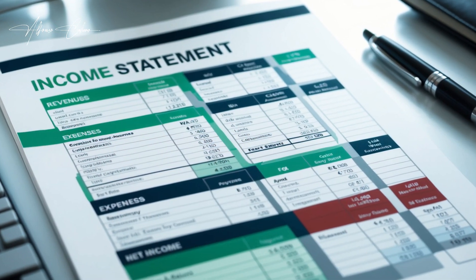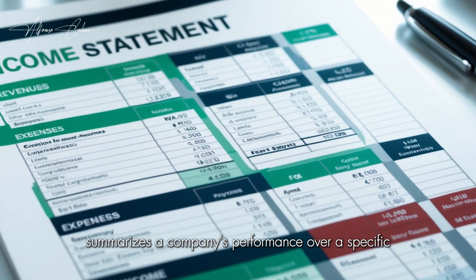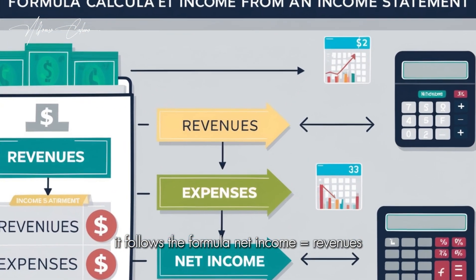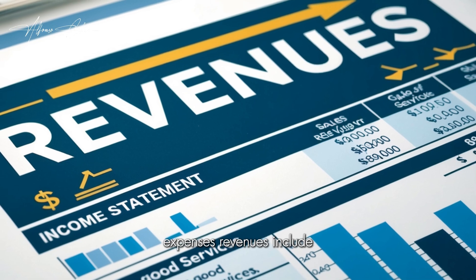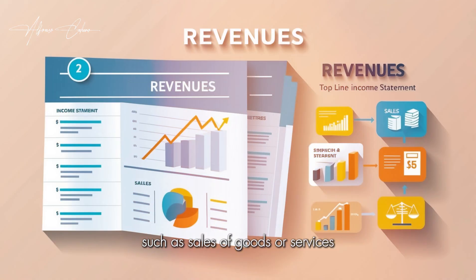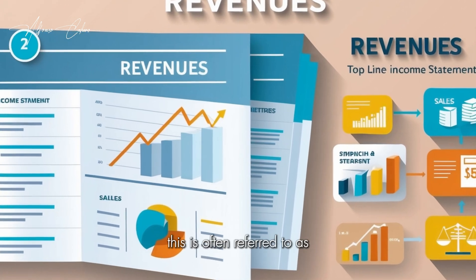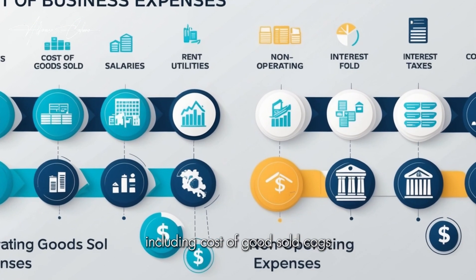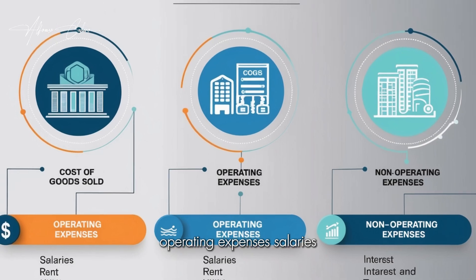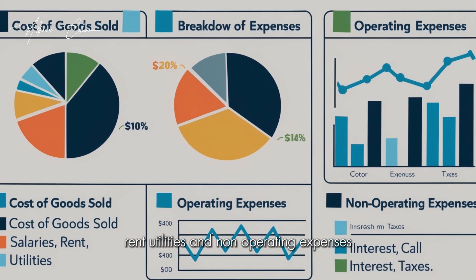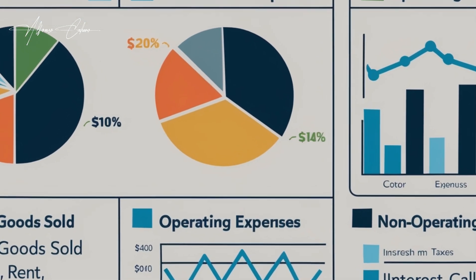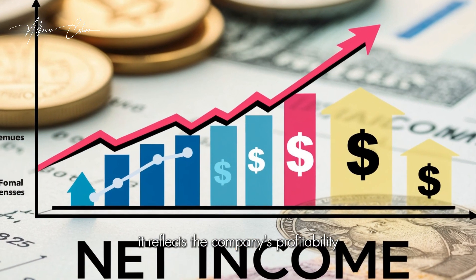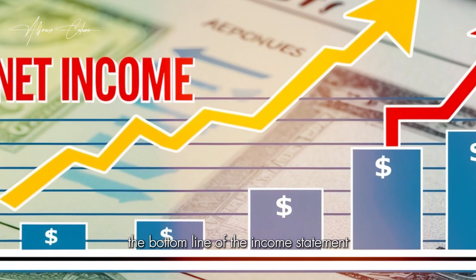The income statement summarizes a company's performance over a specific period, showing how much it earned and spent. It follows the formula: Net Income = Revenues − Expenses. Revenues include all income from primary business activities, such as sales of goods or services — often referred to as the top line. Expenses cover all costs incurred to generate revenue, including cost of goods sold (COGS), operating expenses such as salaries, rent, and utilities, and non-operating expenses like interest and taxes. Net income is the profit or loss after all expenses are deducted from revenues, reflecting the company's profitability — often referred to as the bottom line.